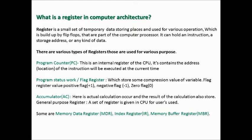Program Counter: this is an internal register of the CPU. It contains the address, or location, of the instruction to be executed at the current time. Program Status Word, or Flag Register: which stores some comparison values of variables. Flag register values are: positive flag = +1, negative flag = -1, and zero flag = 0.